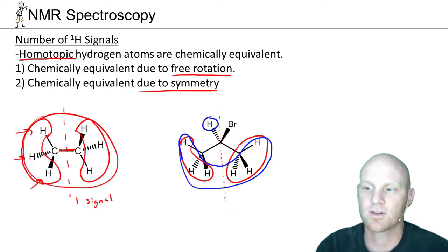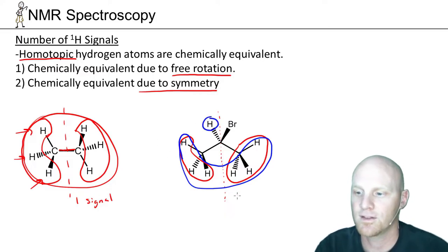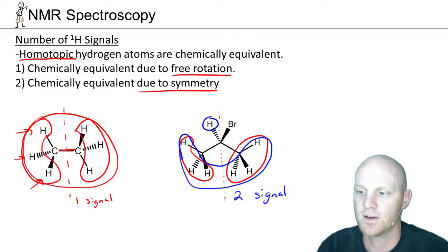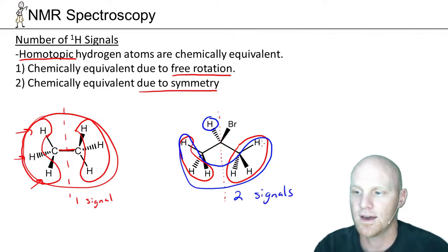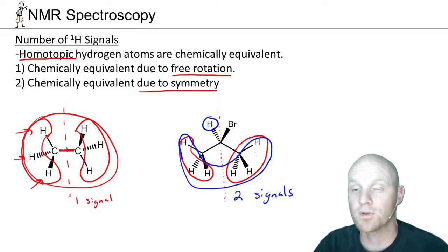We also have this other hydrogen here, so in this case we'd expect two signals total. All six of those hydrogens would again be considered homotopic.